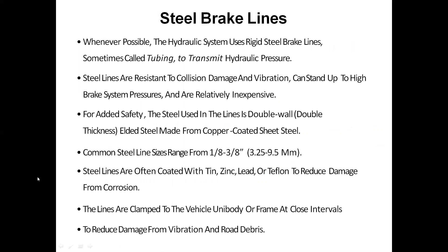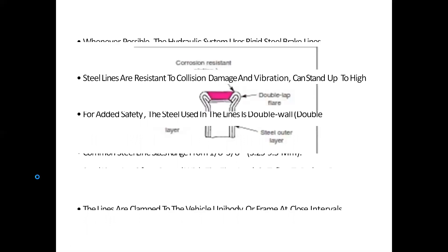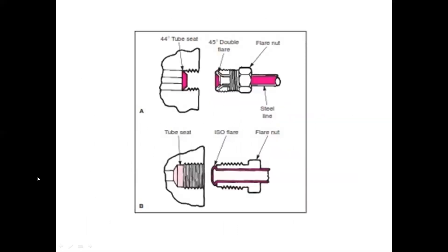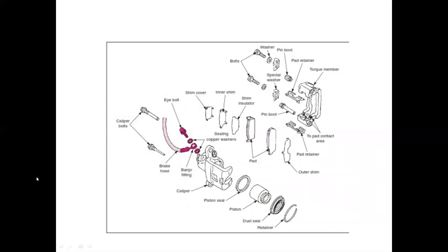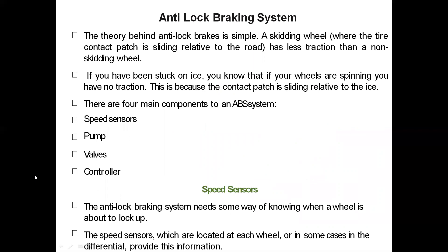Steel brake lines are also used in the hydraulic braking system — sometimes called tubing — to transmit hydraulic pressure. Steel lines are resistant to collision damage and vibration, can withstand high brake system pressures, and are relatively inexpensive. For added safety, the steel used is double-wall thickness welded steel made from copper-coated sheet steel. In the next class we will see another braking system.